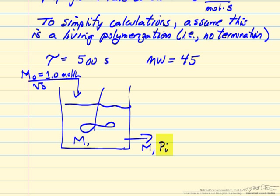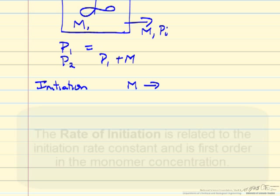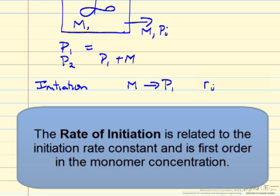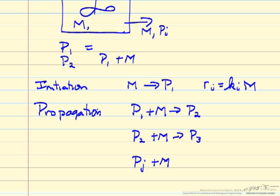PI represents the concentration of the polymer that has I monomer units. P1 means it has one monomer unit — this is the initiation step — and then P2 is P1 plus M to make a two-monomer polymer. The reactions we're looking at include an initiation step in which the monomer becomes active, and then P1, which is reactive, can react with a monomer unit to make P2. P2 can react with a monomer unit to make P3, and in general Pj can react with a monomer unit to make Pj plus one.